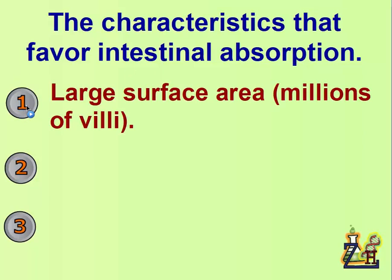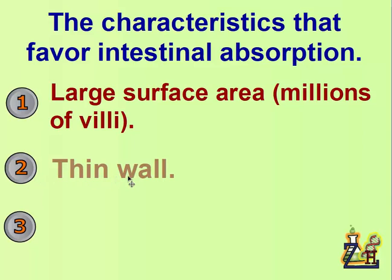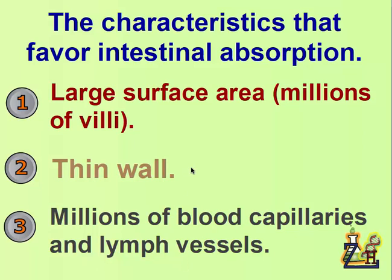The first characteristic is a large surface area due to the presence of millions of villi. The small intestine fits in a small area in the abdomen, but due to its folds, ridges, and millions of villi, the surface area of absorption can reach 200 square meters. The second characteristic is the presence of a thin wall of the villus, blood capillary, and lymph vessel, allowing nutrients to pass through easily. Finally, millions of blood capillaries and lymph vessels — since each villus has both — ensure that most or all nutrients are absorbed efficiently into the bloodstream.